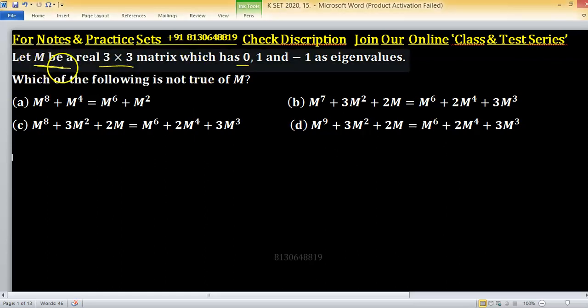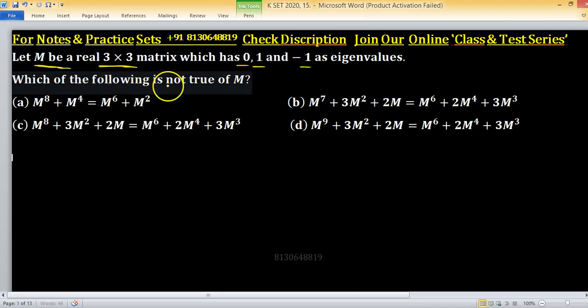Let M be a 3 cross 3 real matrix which has 0, 1, and minus 1 as eigenvalues. Which of the following is not true of M?